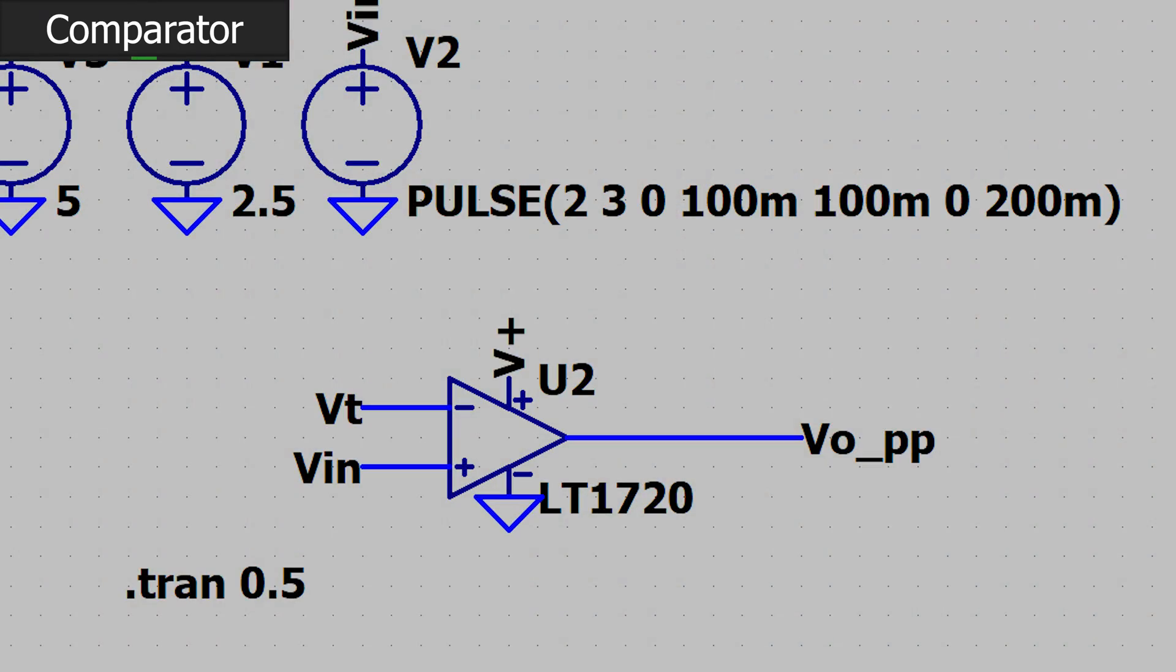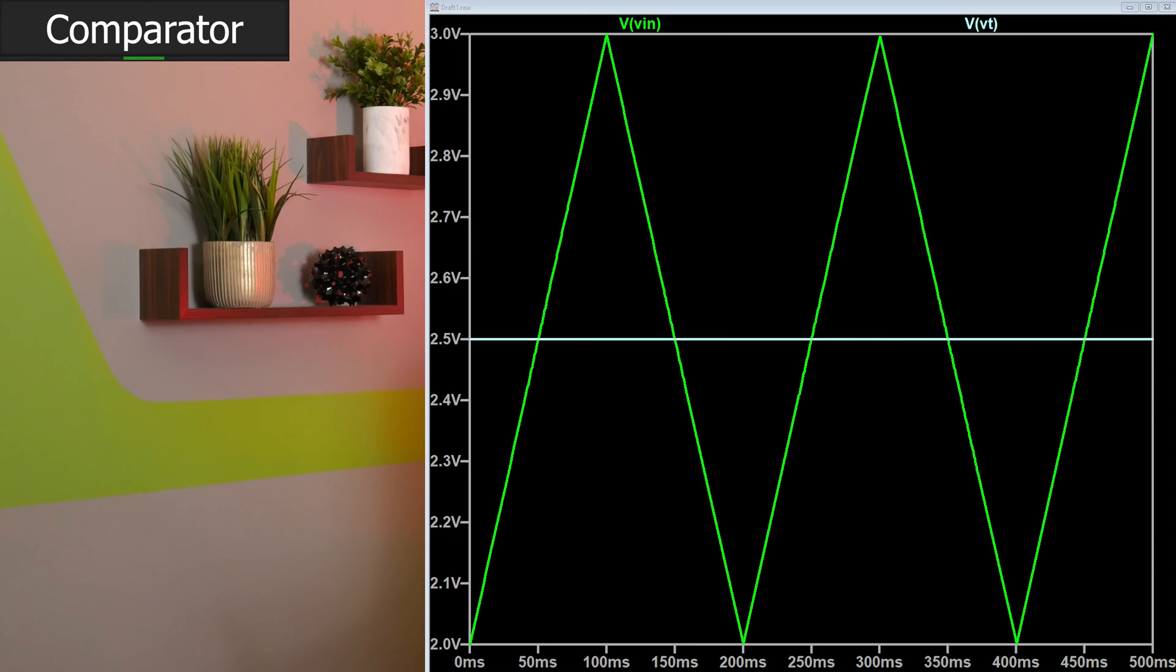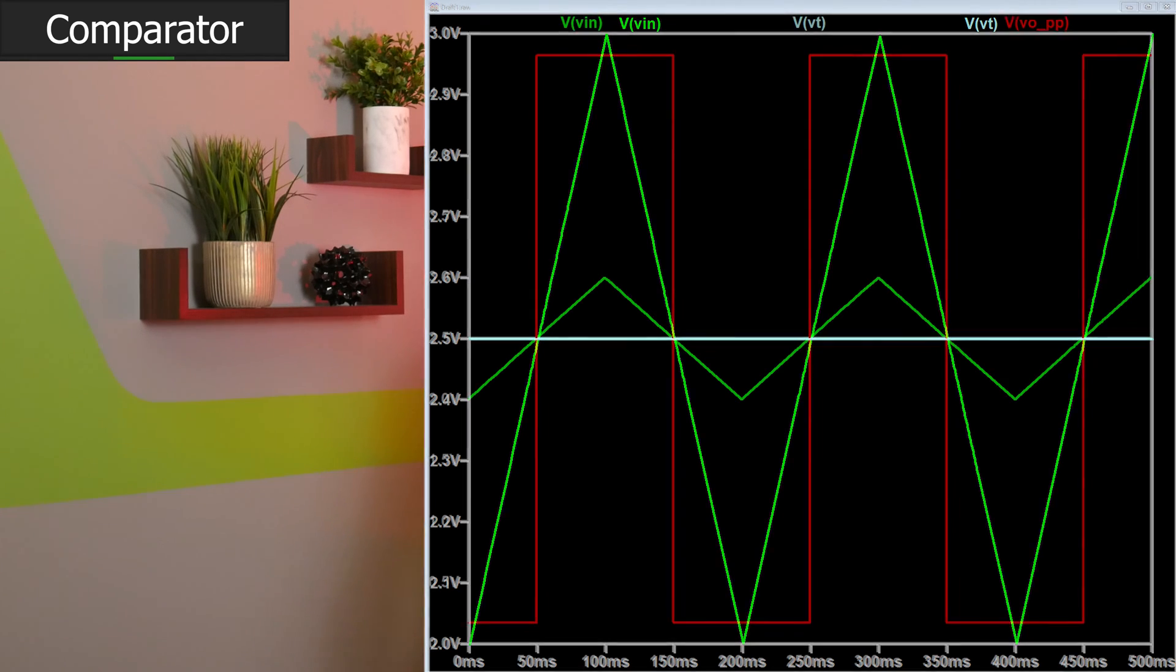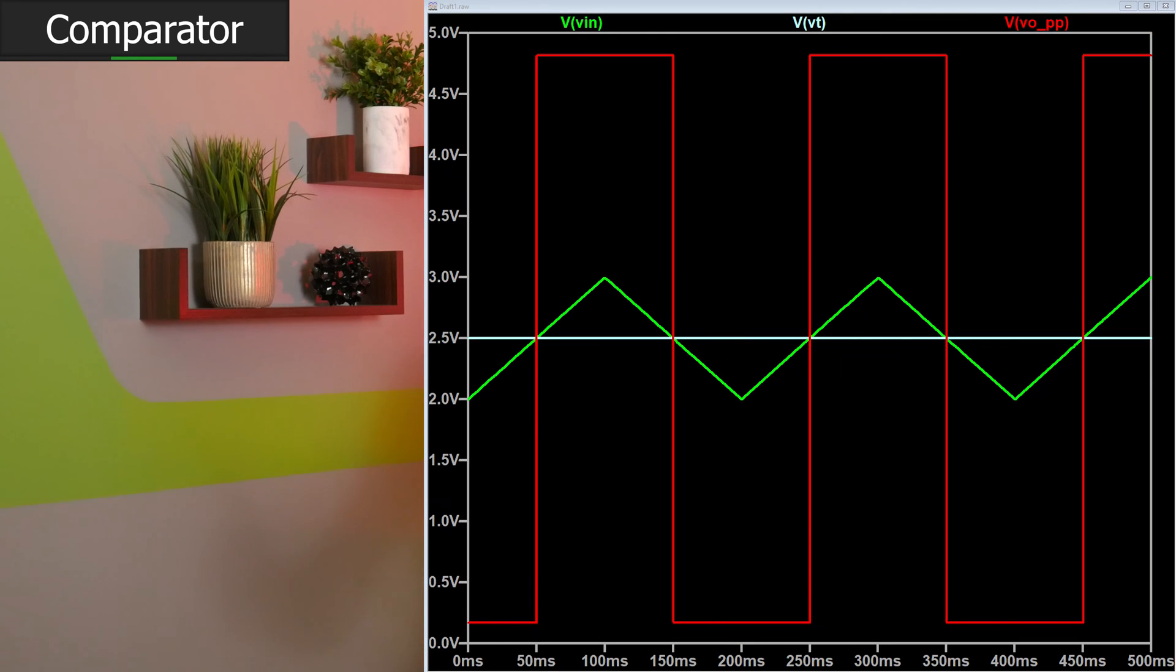First of all, what is a comparator? Well, a comparator looks a lot like an op amp, but internally, it's optimized differently. Comparators are designed such that when the voltage applied to the positive terminal is above the voltage applied to the negative terminal, the output is railed to the positive supply voltage. When this condition is not true, the comparator outputs the negative supply voltage, which is typically zero volts. Simple as that.